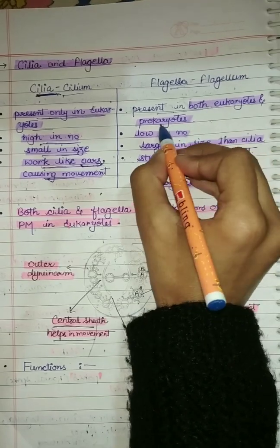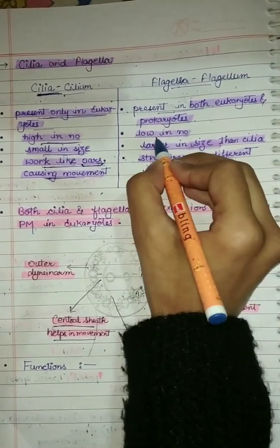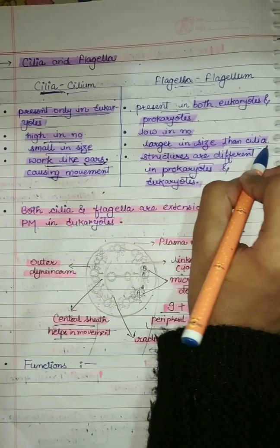Flagella are present in both eukaryotes and prokaryotes, but their structures are different in eukaryotes and prokaryotes. They are low in number and larger in size compared to Cilia.